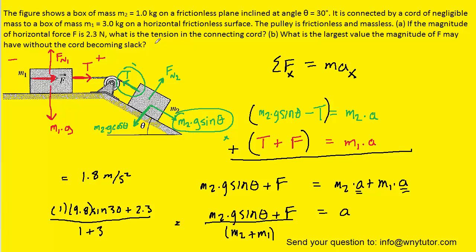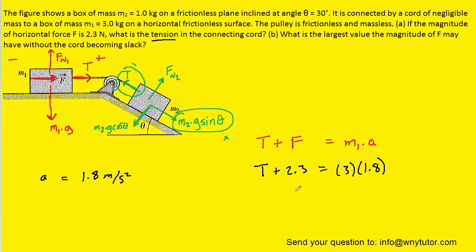Now we're not yet done with part a because it wanted us to calculate the tension. But now that we have the acceleration, we can actually go back and plug it into one of our earlier equations to solve for tension. We'll go back to the equation that's colored in red and plug in the acceleration, M1, as well as the force. We could subtract 2.3 from both sides, and when we solve for the tension T, we're going to end up with 3.1 newtons. And so this is the correct answer to part a.